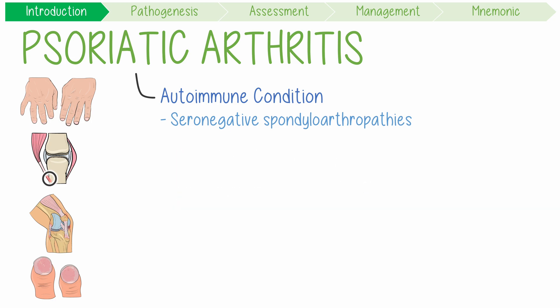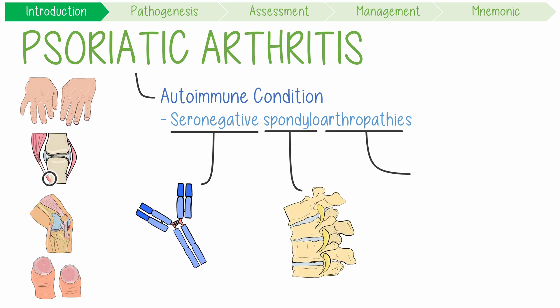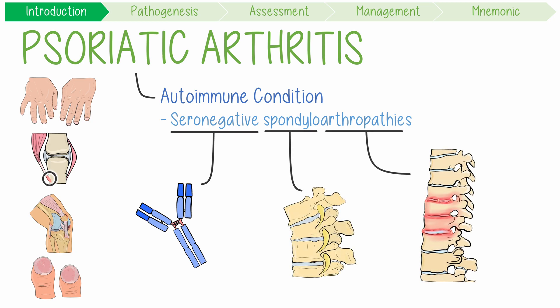This big term can be broken down a little bit more. Seronegative means serum and negative, implying there's no detectable antibodies in the serum specifically associated with this condition. Spondylo just means spine, while arthropathy just means joint disease, suggesting all these conditions can cause vertebral arthritis.